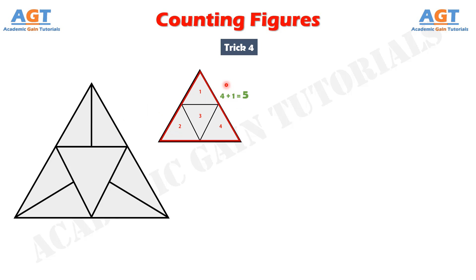Now, besides these 5 triangles, let's see how many other triangles were formed by drawing those 3 lines. Due to the first line, 2 extra triangles were formed. Similarly, 2 extra triangles were formed due to the second line, and another 2 triangles were formed due to the third line. Keep in mind not to count a triangle that has already been counted in the 5 triangles. So we have 2 plus 2 plus 2 equals 6 extra triangles. Adding 5 and 6 gives 11 total triangles in this figure.